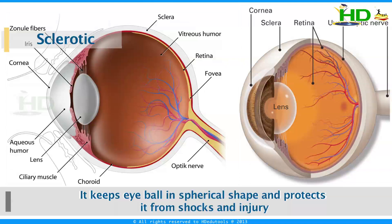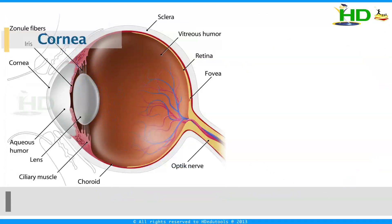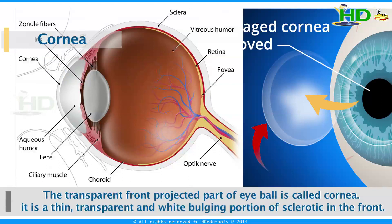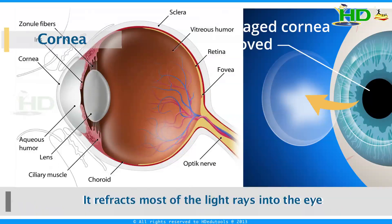Another part is the cornea. The transparent front projected part of the eyeball is called the cornea. This is the cornea — it is a thin, transparent, white bulging portion of the sclerotic in the front. It refracts most of the light rays into the eye.